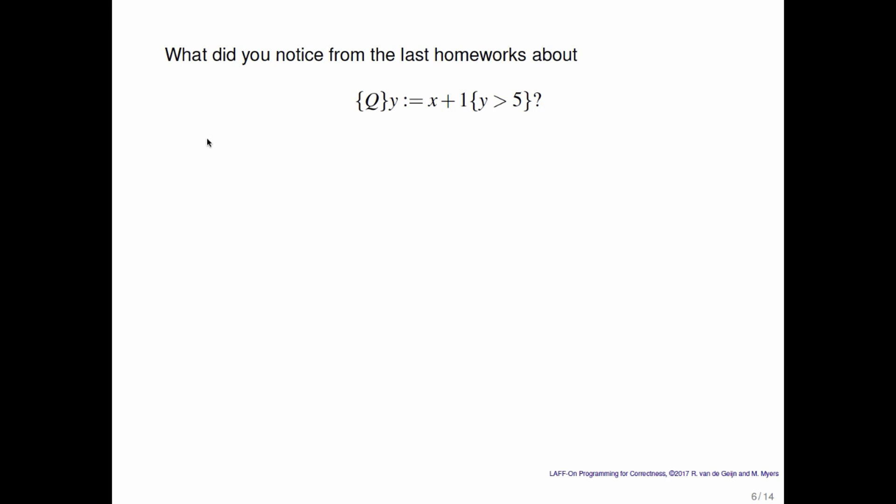So what did you notice from the last homeworks about the Hoare triple precondition Q, command y becomes x plus 1, leaving you in a state described by the postcondition y is greater than 5?